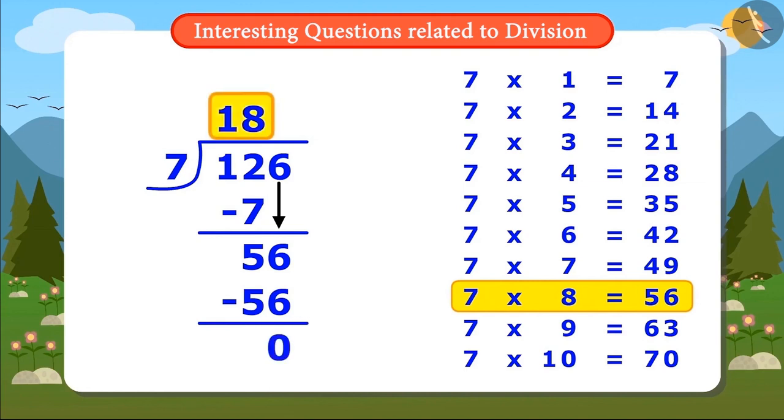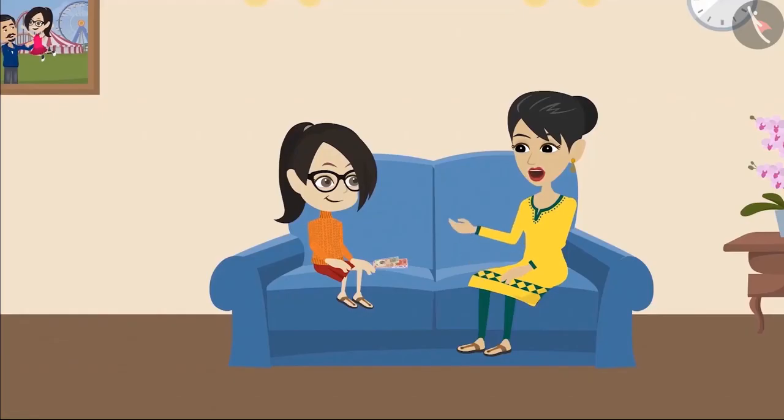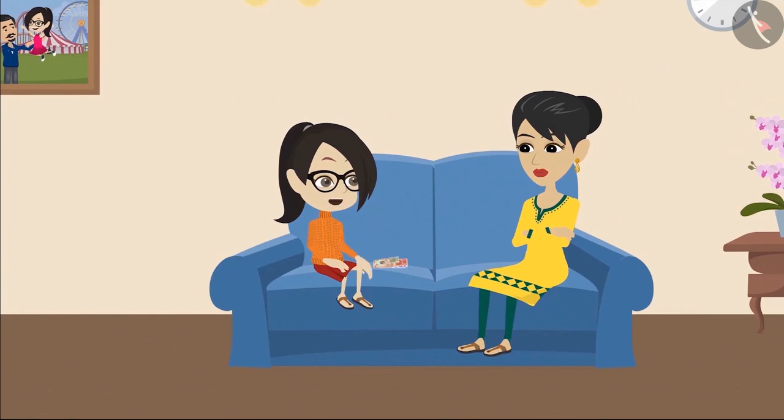The answer is 18. This means that if you spend 7 rupees per day, then you will spend 126 rupees in 18 days. Do you see, Vandana? Even after dividing, the answer is the same as it was during repeated subtraction. Yes mummy, now I understand that division can be used instead of subtracting the same number repeatedly.